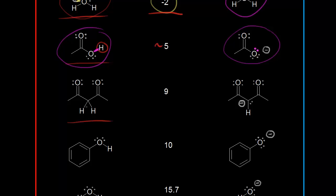Next, we have these two protons, and this proton has a pKa value of approximately nine. If a base takes that proton, the electrons in magenta are left behind on a carbon, giving that carbon a negative one formal charge. Our next compound is phenol, and the acidic proton on phenol — if a base takes that proton, these electrons in magenta are left behind on the oxygen, giving the oxygen a negative one formal charge. So this is our conjugate base, and the pKa for that proton is approximately 10.